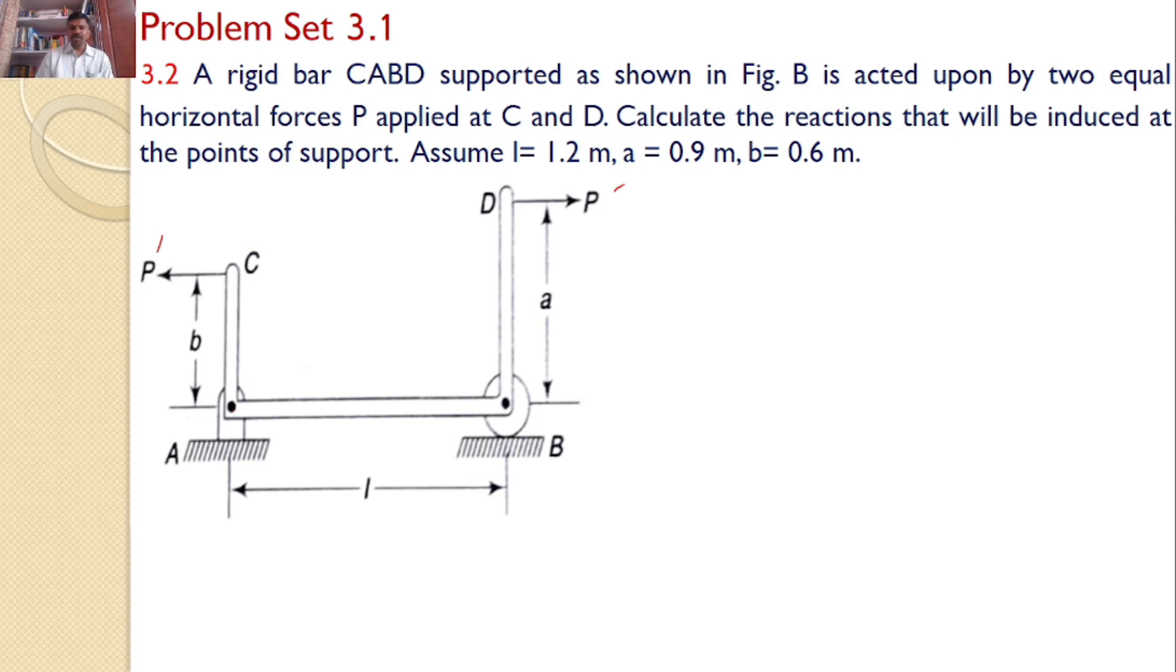B is a roller support, hence only a vertical reaction will develop. Let us assume that vertical reaction at A is RV, the horizontal reaction is RH, and the reaction at B is RB. Our interest is to find these values.